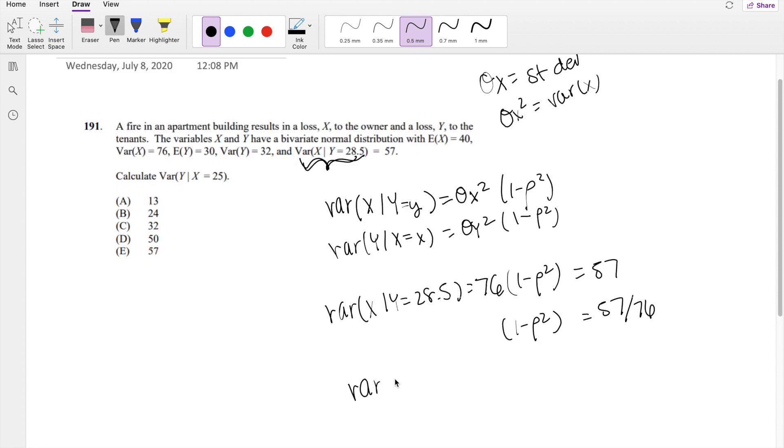Then knowing that, we can actually just plug it into our second formula. The variance of y given x is equal to the variance of y, which we know to be 32, times 1 minus rho squared, where 1 minus rho squared is equal to this thing right here. 32 times 57 over 76, this is equal to 24, which is our answer B.